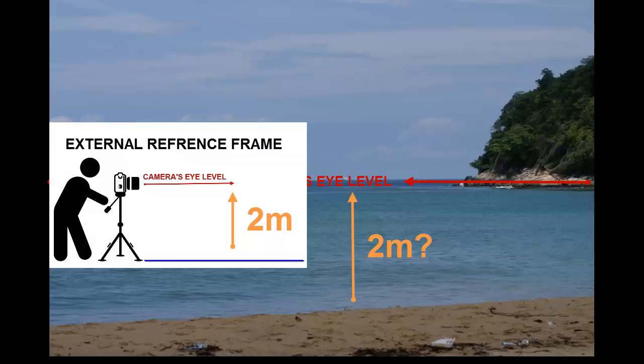we end up with a horizon in front of us that appears to be two meters high as well. But no matter how high we go, the horizon will always be at our eye level if we are looking straight ahead.